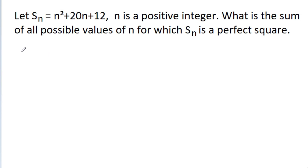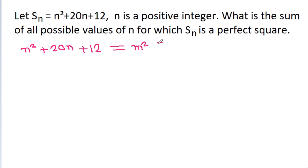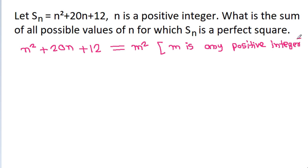So Sn is n squared plus 20n plus 12, and that is a perfect square. Suppose it equals m squared, where m is any positive integer.